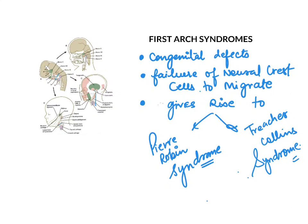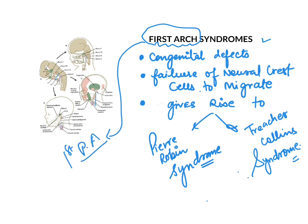Let's look at the first arch syndrome. As the name suggests, it happens because of the pharyngeal arches — specifically the first pharyngeal arch. By the way, do you know how many pharyngeal arches we have in total? There is a small controversy around that, so let me know in the comment section. Coming back to the topic, we are talking about the first pharyngeal arch syndromes.